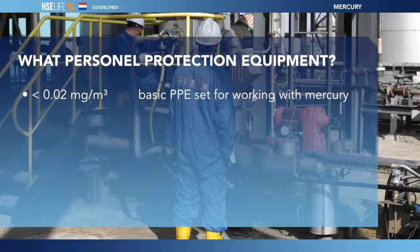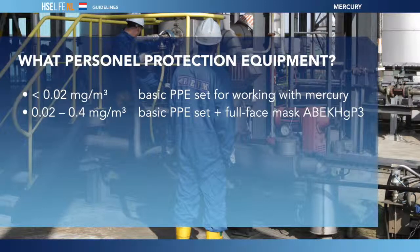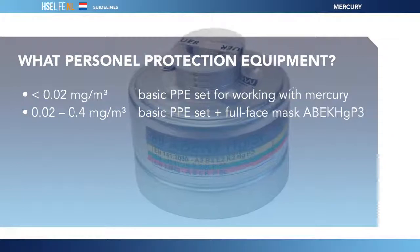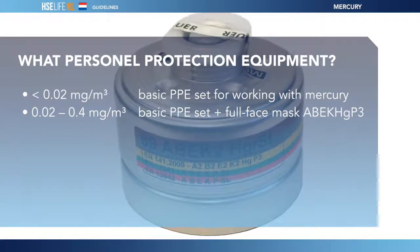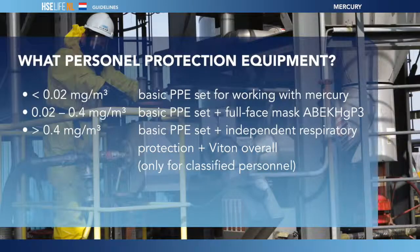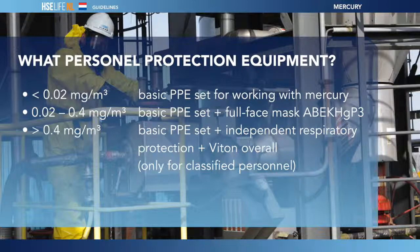If the mercury vapour concentration per cubic metre is between 0.02 and 0.04 mg, then a full face mask is complementary to the basic protection equipment. The full face mask is called an ABEK HGP3. If the mercury vapour concentration is more than 0.04 mg per cubic metre, then only classified personnel may carry out the work. Besides the basic protection equipment, they use independent respiratory protection equipment and a VITON overall.